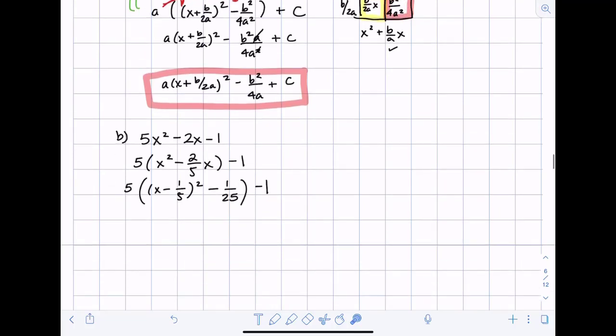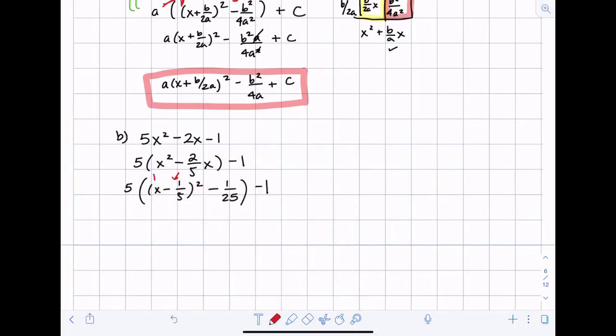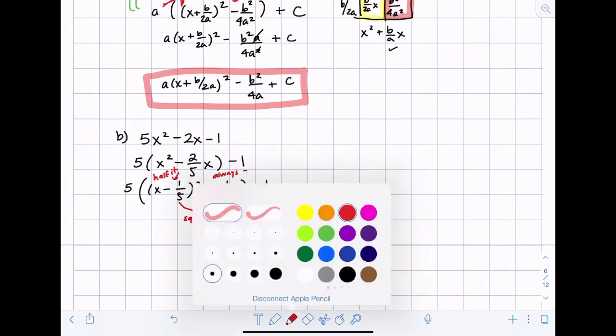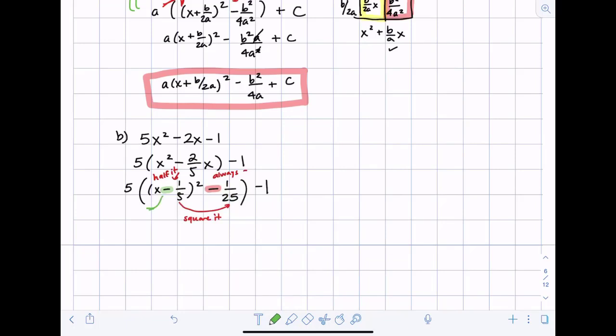So this pattern of half it, square it, and let's highlight this. This is always going to be negative. And some people get a little confused on this sign here. This sign should match the coefficient above. So it should be matching.